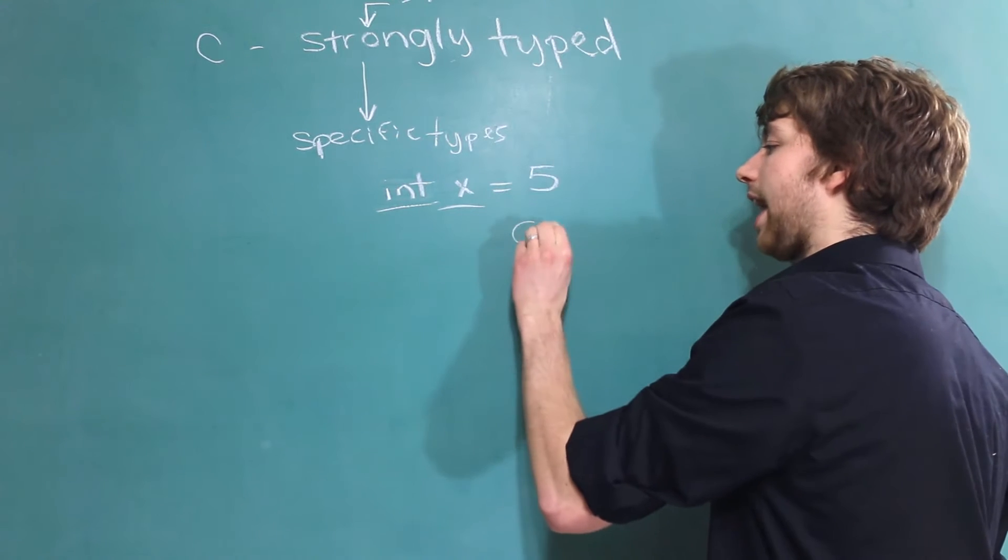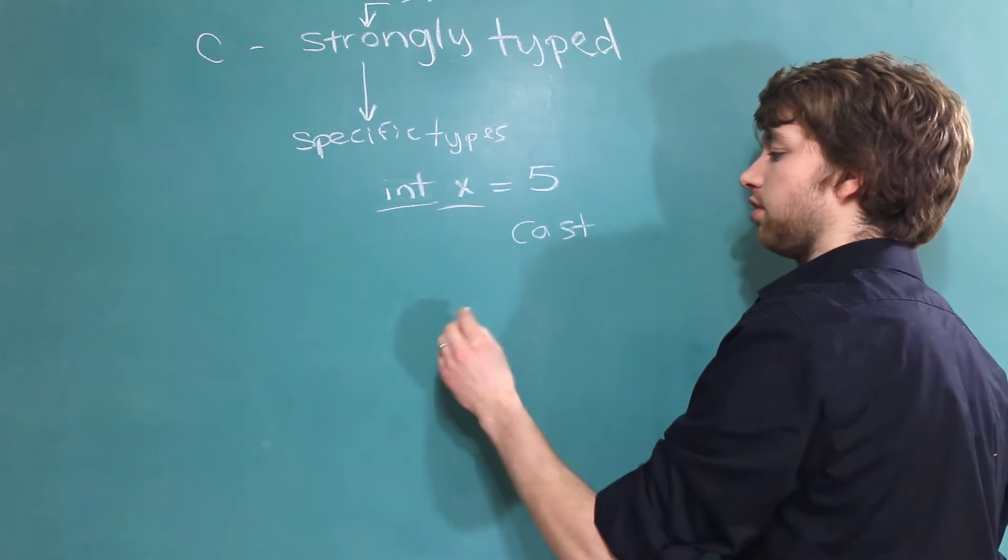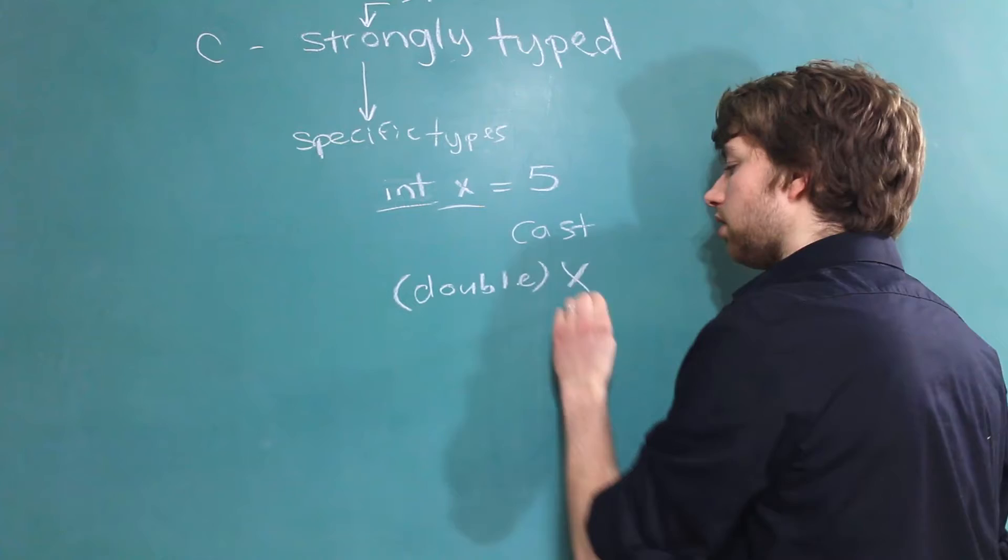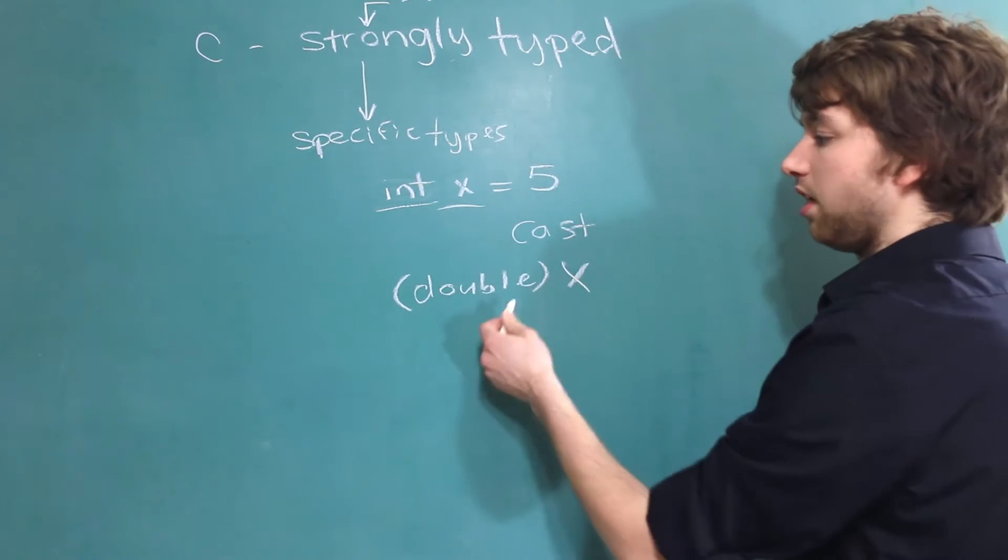We can take the value and we can cast that value. So for example you could do something like this, which will change the 5 which is an integer to a double.